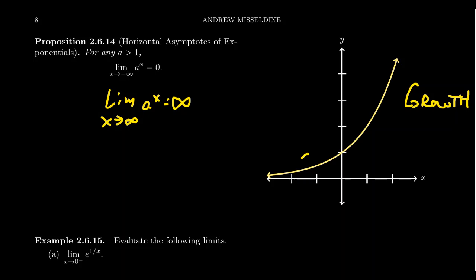It's also important to know that as you go towards negative infinity, the function actually decays towards zero. A growth exponential function has a horizontal asymptote at y equals zero, but only on the left side of its graph. On the right-hand side, it goes off towards infinity.